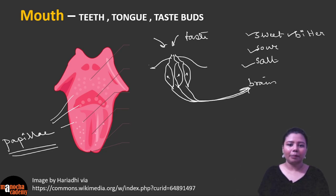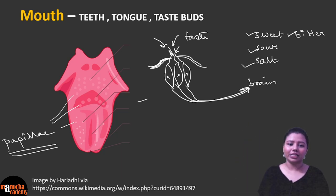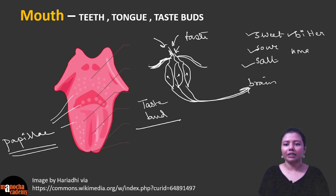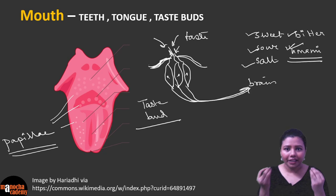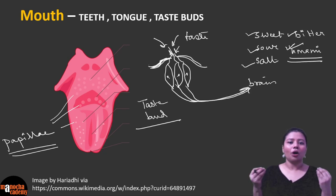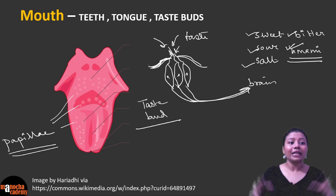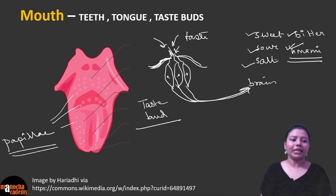Anything with taste enters the papillae through a pore, touches the nerve, and the nerve sends signals to the brain — this is the taste bud below the papillae. There is another taste discovered in Japan known as umami. It has been proven that we have separate taste buds for umami. Umami is the taste associated with garlic, monosodium glutamate (aginomoto) used in Chinese food, and onion.